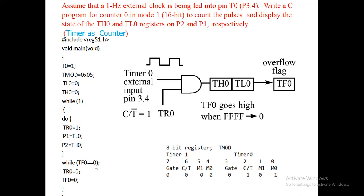Once TF0 equals 1, that means the registers have overflowed. The program exits the loop, sets TR0 to 0, and clears TF0 to 0 — the usual procedure. Then it returns to the start: TR0 is set to 1 again, TL0 and TH0 are initialized to 0, and the count operation continues, displayed on P1 and P2.